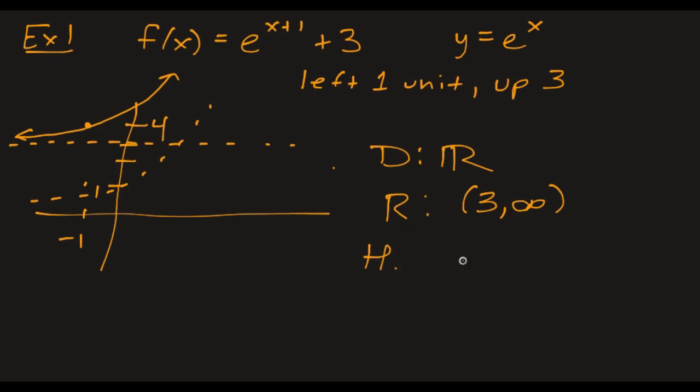And our asymptote, the horizontal asymptote, is y equals 3. Remember to say y equals 3 instead of just 3, just like we did with the rational functions, because I want to know that you understand this is a horizontal line described by y equals 3.